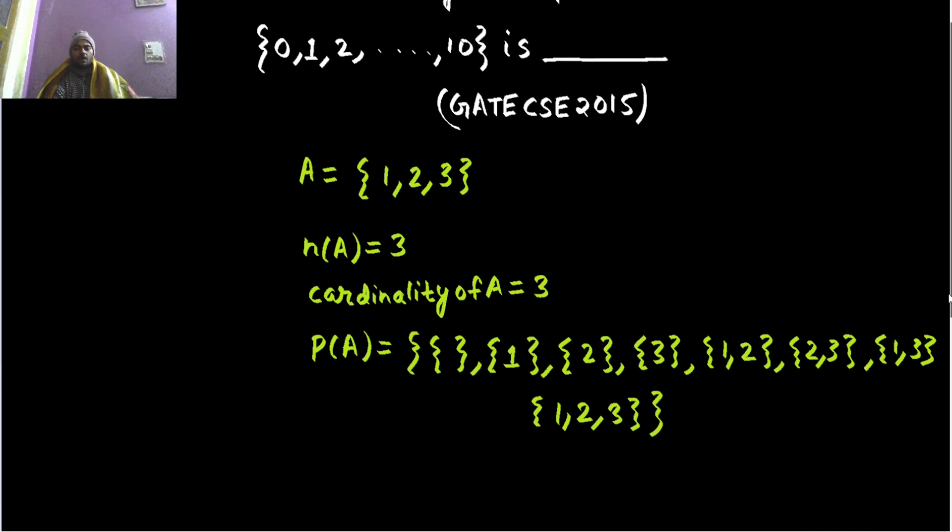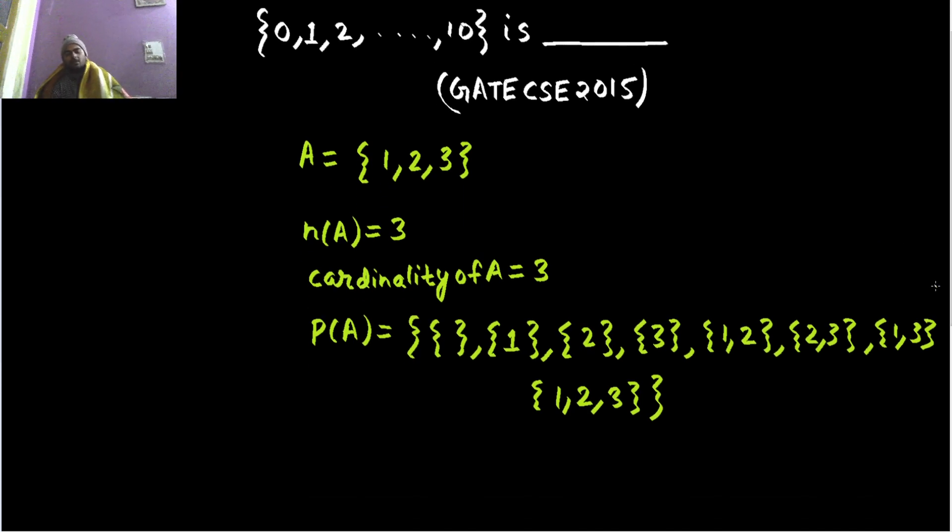Now if you count the number of elements in this set, or the cardinality of the power set: 3, 6, 7, and 8. So the number of elements in power set of A is nothing but 8, and the number of elements in A was 3. How can you relate 3 to 8? Now 2 cube is 8, so you can write a general formula.